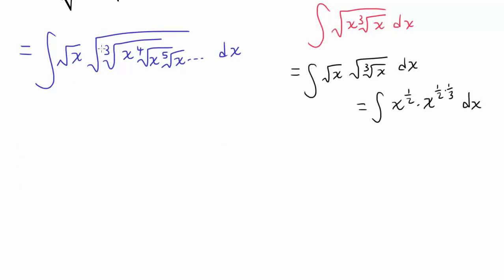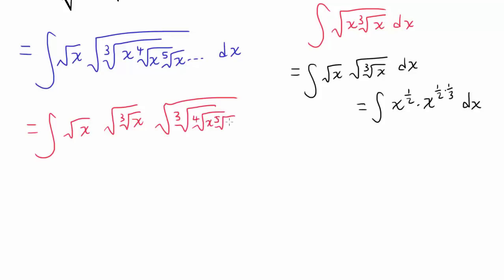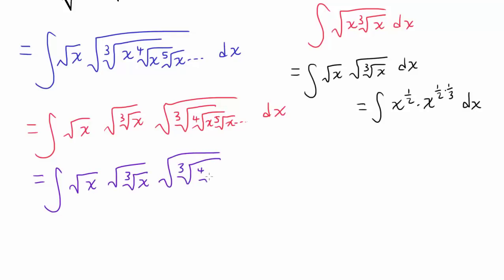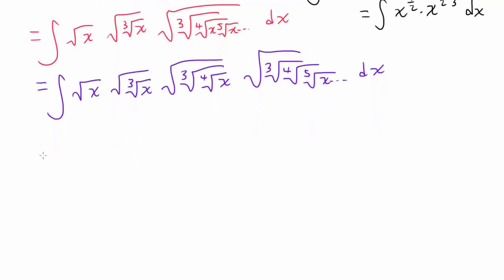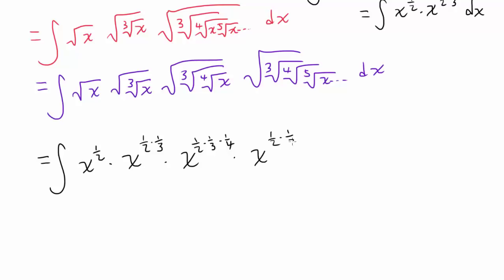We can break apart the cube root of x to x and the extended part, giving us square root of x, square root of cube root of x, and square root of cube root of fourth root of x, fifth root of x, and so on. Doing this one more time, distributing the fourth root of x, we get square root of x, square root of cube root of x, square root of cube root of fourth root of x, and so on. The powers are x to the one-half, x to one-half times one-third, x to one-half times one-third times one-fourth, then times one-fifth, and so on.